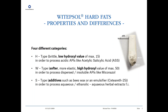Then we have the S type, which is a ready-to-use base because it contains, besides the hard fat, some additives. All of them contain CTRA25, which is an ethoxylated fatty alcohol of C16 and C18. Sometimes beeswax or other ingredients are added. These S types are important for processing aqueous or aqueous-ethanolic herbal extracts. You can use these S types as they are — there is no need to add an additional emulsifier because you can incorporate up to 10% water and still produce a genuine suppository.